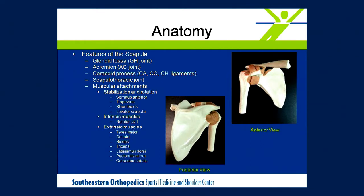The muscle attachments at the scapula we can divide up into three different groups. First, the stabilizing muscles of the scapula — so the trapezius, rhomboid, serratus anterior, and the levator scapulae. Then the intrinsic muscles, the rotator cuff muscles with their attachment at the scapula and then also at the head of the humerus. And then the extrinsic muscles, the main arm and shoulder movers.